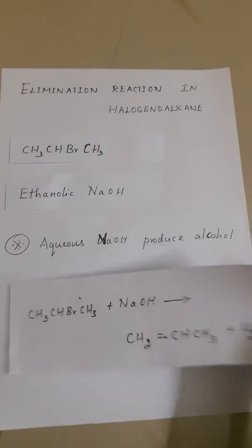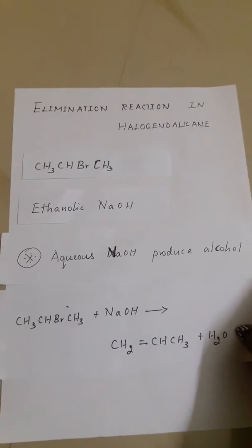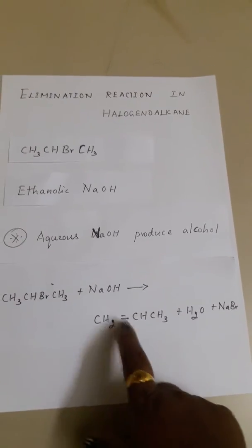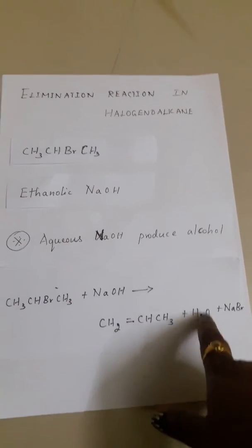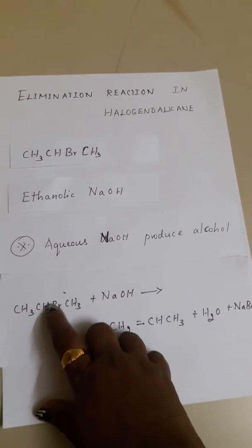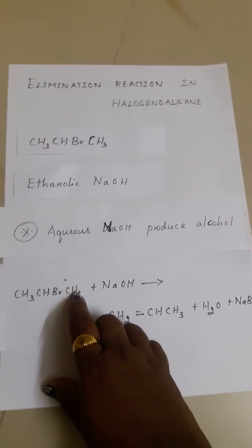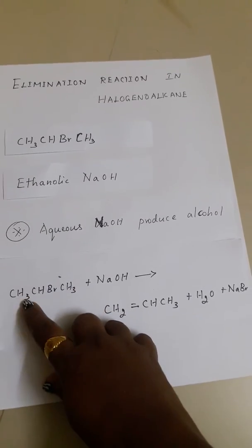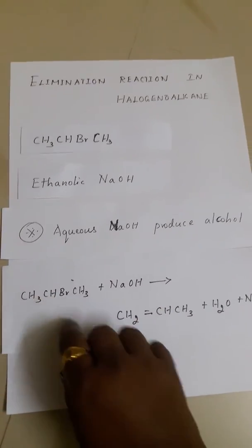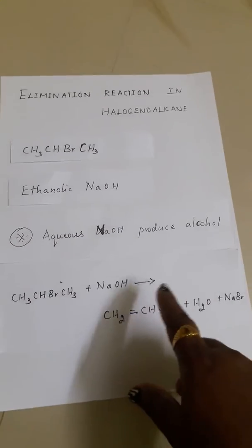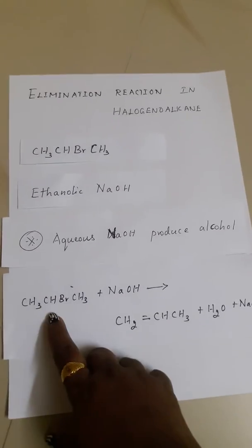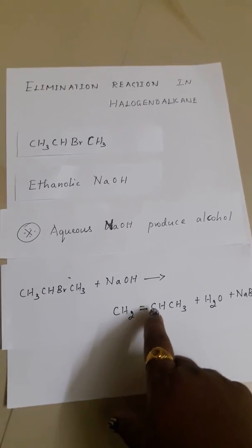When ethanolic NaOH reacts with a halogeanoalkane, you will get an alkene. The bromine reacts with sodium to form NaBr, and a hydrogen atom from one of the adjacent carbon atoms is removed along with the bromine as HBr — producing water and NaBr. That is why this forms an alkene through elimination.